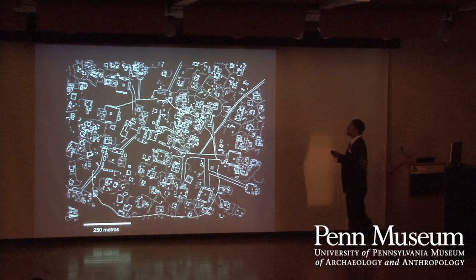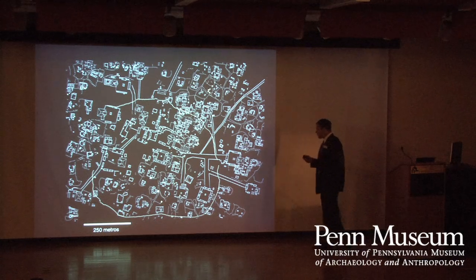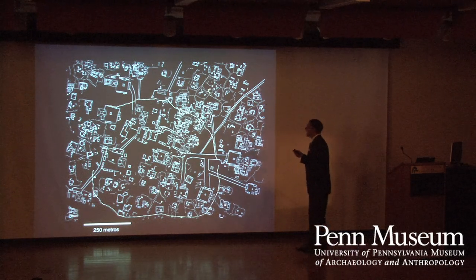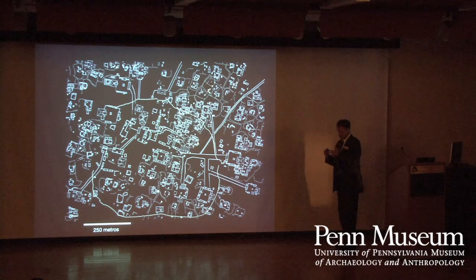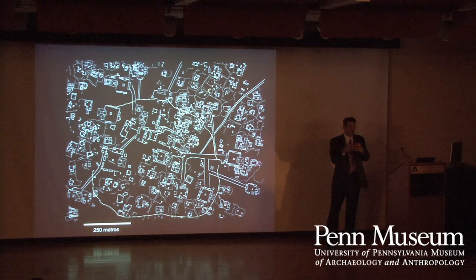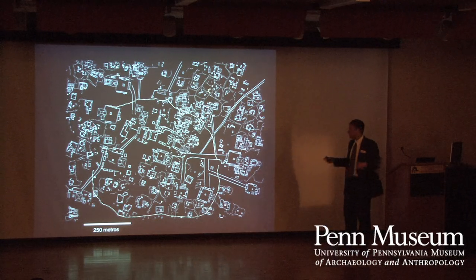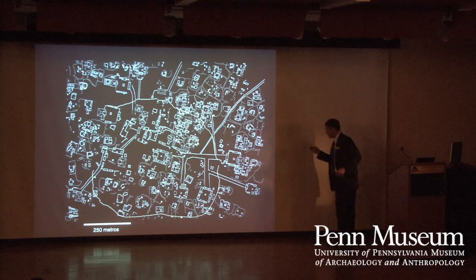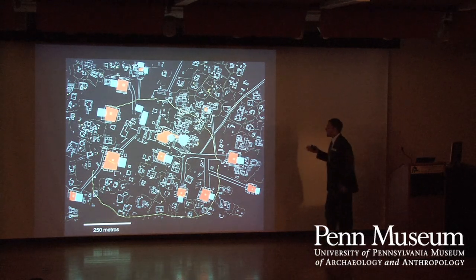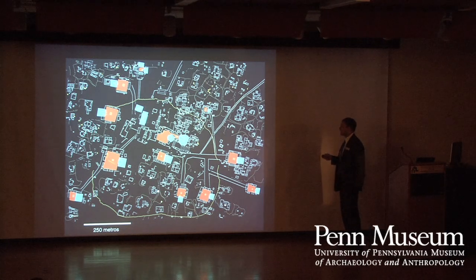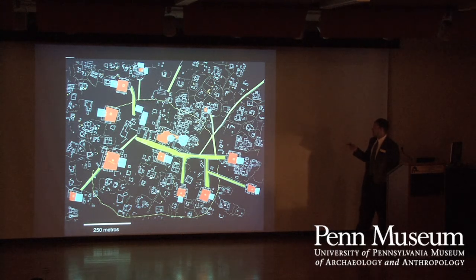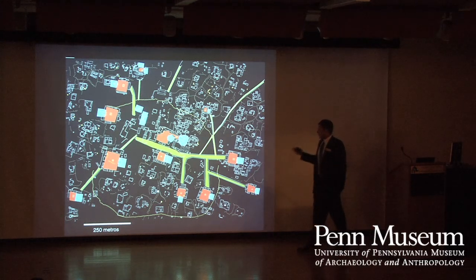One of the interesting things about Chuchuchmiel is that it lacks a monumental center. Unlike Chichen Itza or other northern lowland sites that have big pyramids and monumental plazas, at Chuchuchmiel you actually have to color in the large things on the map to find what the big architecture is. It does have a lot of causeways that connect these monumental groups together, but they're kind of hard to see.